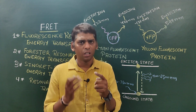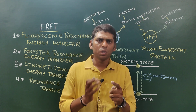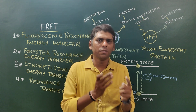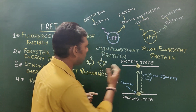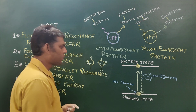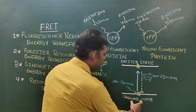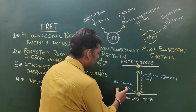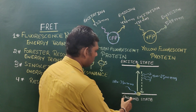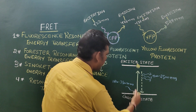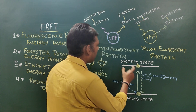To understand FRET, you should have an idea about fluorescence — I suggest watching my previous videos on that topic. Briefly, fluorescence is a process in which a molecule in its ground state absorbs radiation of a shorter wavelength, becomes excited, and leaves its ground state to reach an excited state.